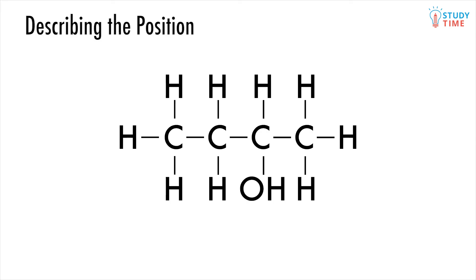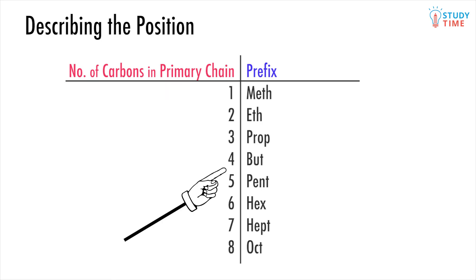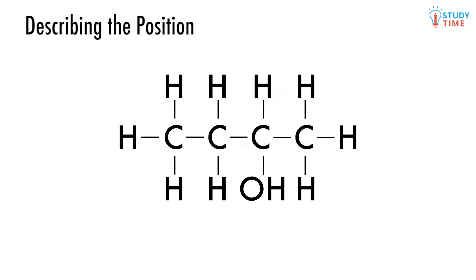For example, this compound is pretty straightforward, and a quick count will tell us that the carbon chain is four carbons long. So we are looking at a bute. But what if we were asked how far down the chain that OH group is? We simply give the number of the carbon it is attached to.